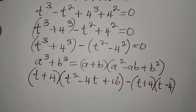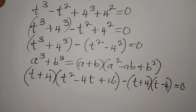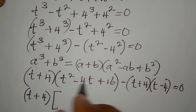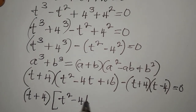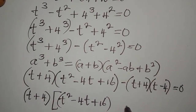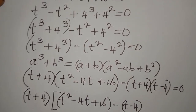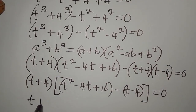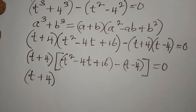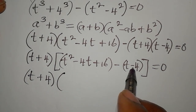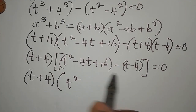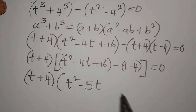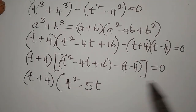Setting everything equal to zero, I notice (t + 4) appears in both terms, so I factor it out. This gives: (t + 4) times the quantity [t squared minus 4t plus 16 minus (t minus 4)] equals zero. Expanding inside: t squared minus 4t minus t is minus 5t, and 16 minus negative 4 gives plus 20. So we have (t + 4)(t squared minus 5t plus 20) equals zero.